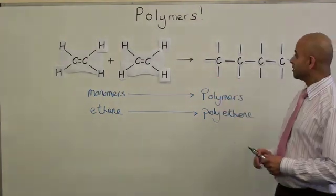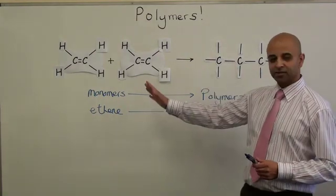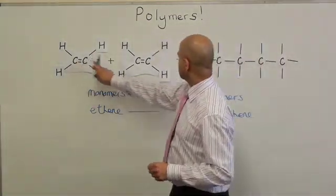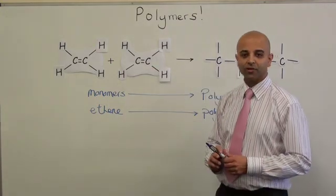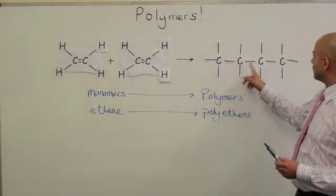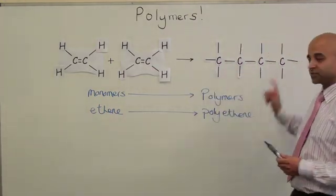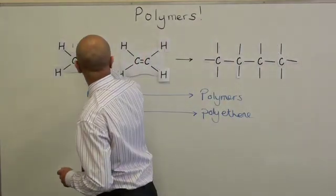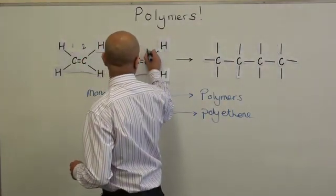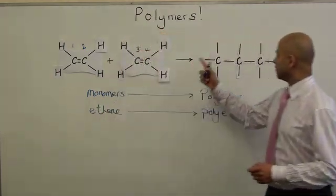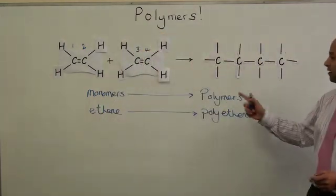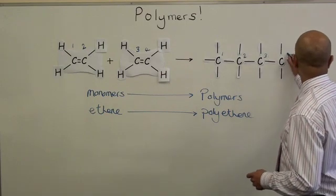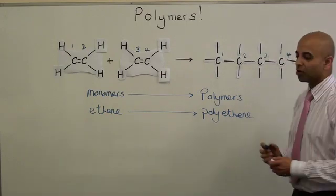The simplest way to draw these out is to number your carbons. In this case, on the left-hand side you've got one, two, three, four carbons in total. And on the right-hand side you've got four carbons — carbon one, carbon two, three, and four.